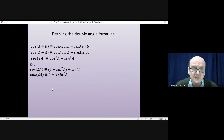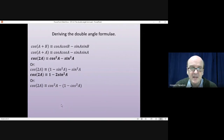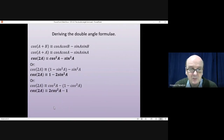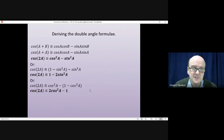The third version changes sin²A into 1 − cos²A, which gives us cos(2A) = 2cos²A − 1. So there are three versions of this formula, and depending on the question you'll need to choose which is the easiest and best one to use.